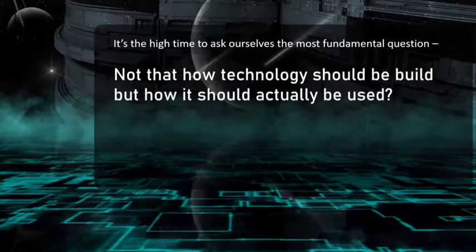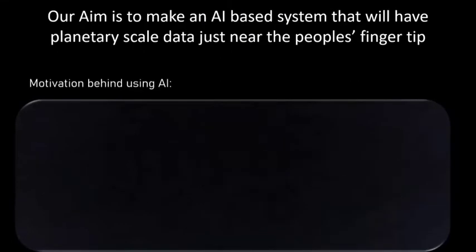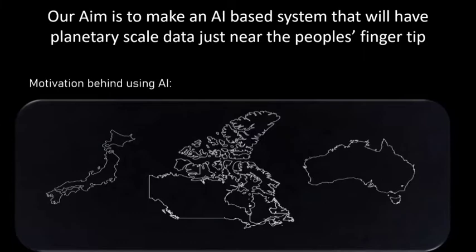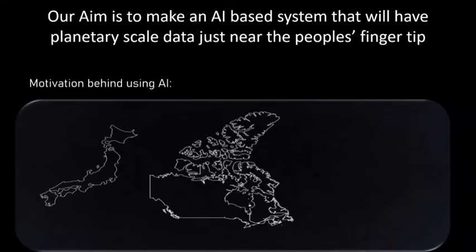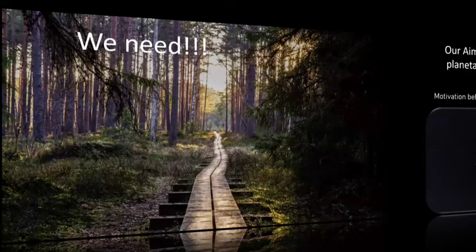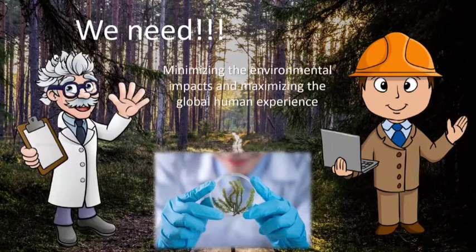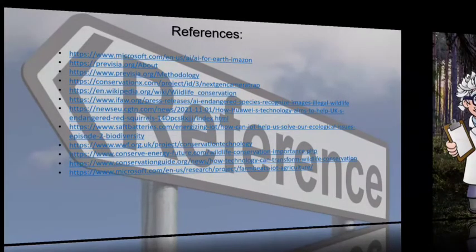Thank you, Rohit. It's high time to ask ourselves the most fundamental question — not how technology should be built, but how it should actually be used. How can we human beings grow and prosper without destroying our own ecosystem? Our aim is to make an AI-based system that will help bring planetary-scale data to people's fingertips. The motivation behind using AI for such things is that AI has grown, contributing to a 4.4% GDP increase and 40 million job opportunities. We need great collaboration between scientists and engineers to minimize environmental impacts and maximize the global human experience. Here we come to the end of our presentation — thank you all for listening.